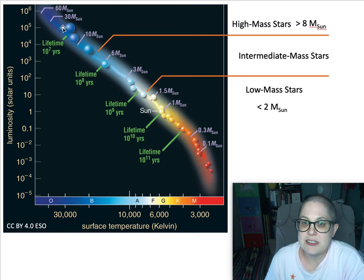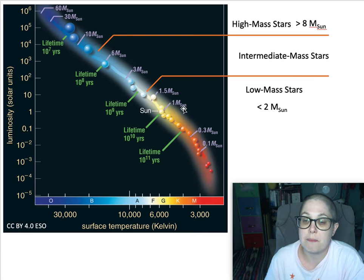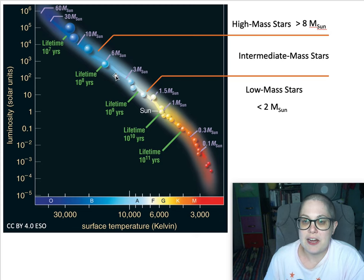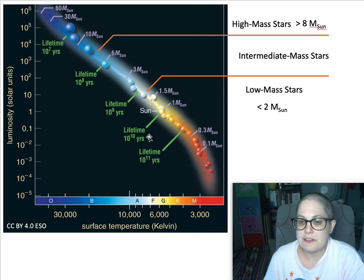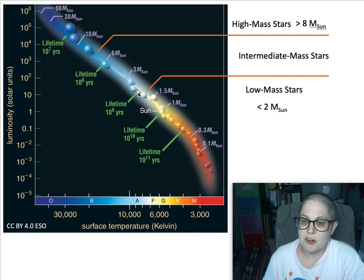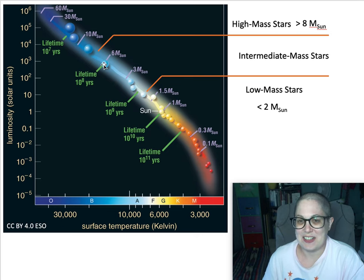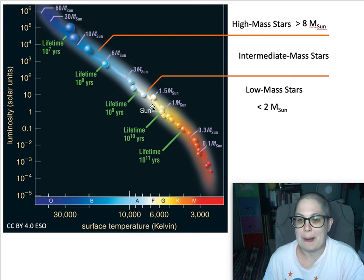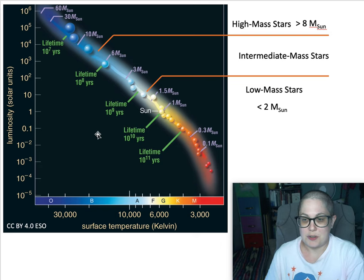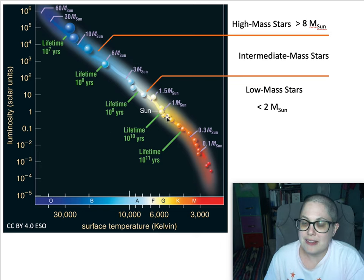For each position on the main sequence, you get the rough mass in solar masses. You have stars that are 1.5, 3, all the way up to 60 times the mass of the sun. Notice the lifetimes: 10 to the 10 is 10 billion — that's the sun. This star's lifetime is only a billion. This one is a hundred million, this one is 10 million. The lifetimes get shorter as you go up, and longer as you go down.